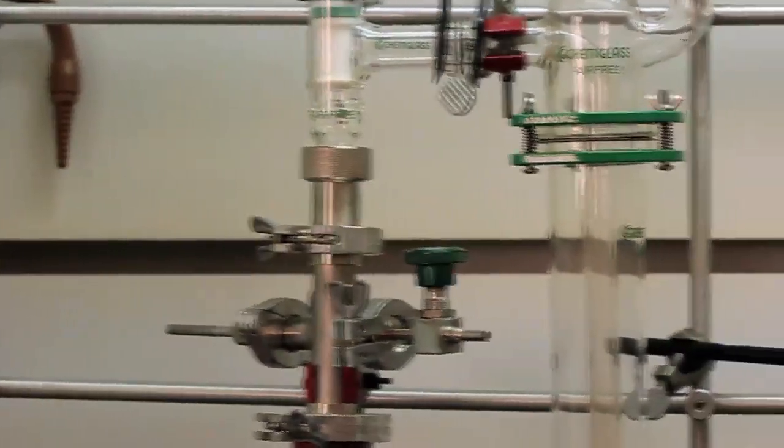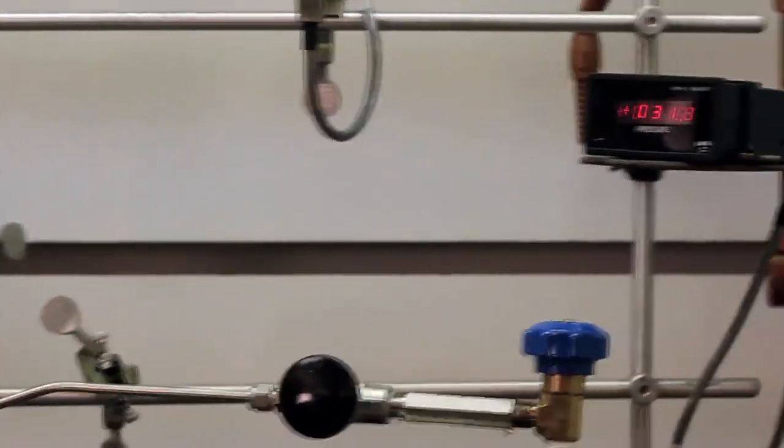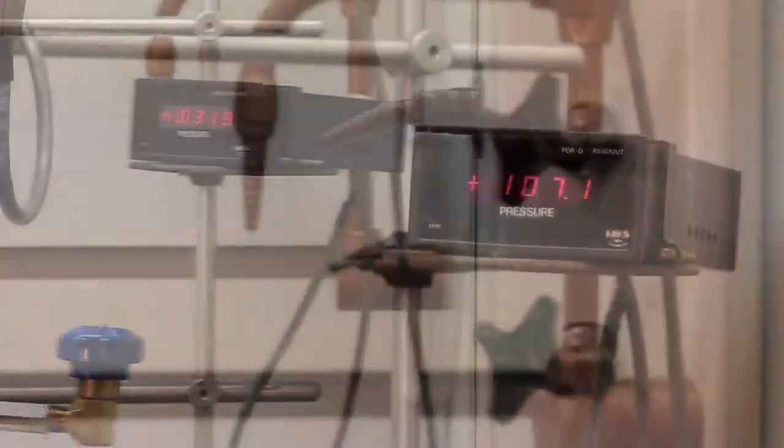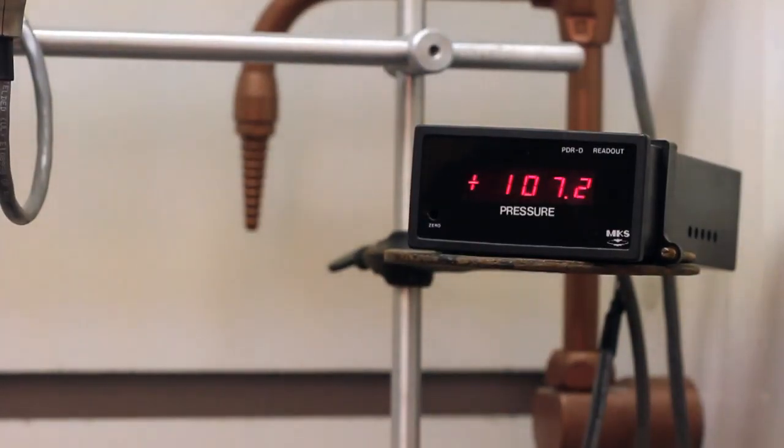We need to know how much of our sample is actually in the sample cell. Since gases expand to fill their container, volume is not a good measure. Instead, you will measure the pressure of the cell, which can be related to the number of molecules in our volume. You'll monitor the pressure using this gauge, which has units of torr.